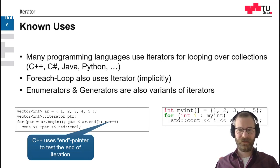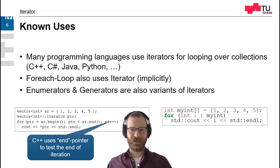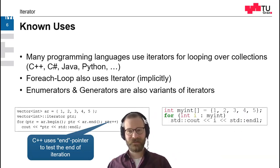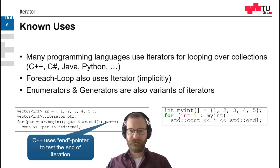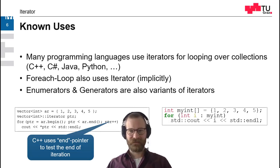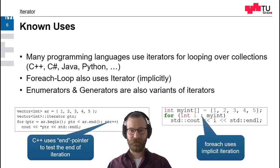Let's look at a foreach loop. Here we have the same array of integers, and we just say for int i in my int. Internally it gets translated to the iterator interface, and the next method is called all the time. So the foreach loop uses implicit iteration.